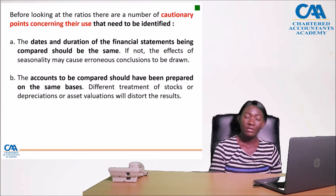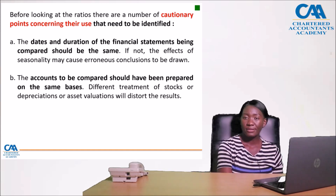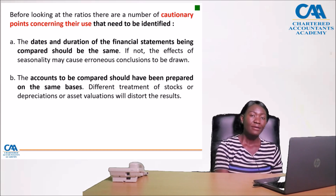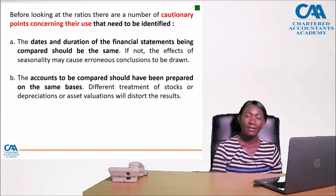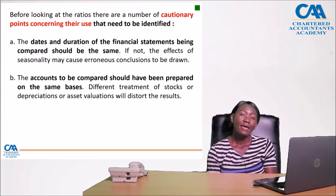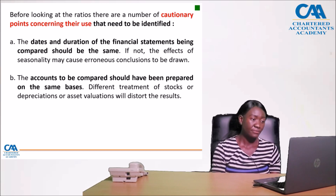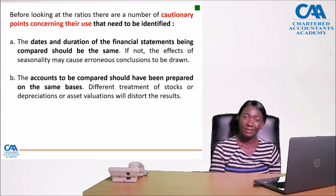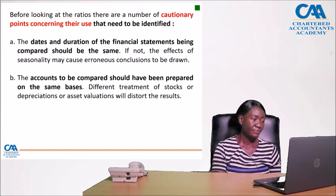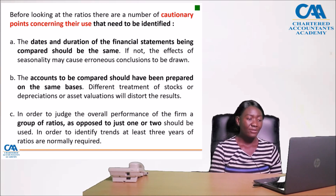The accounts to be compared should be prepared on the same basis. For example, there are different valuation methods and different measurement and recognition criteria from your financial reporting. If company A used absorption costing and FIFO in valuing inventory, you should compare it with a company that also uses absorption costing and FIFO.